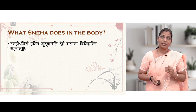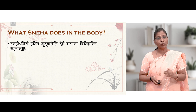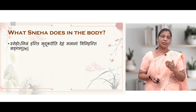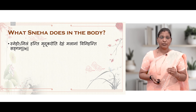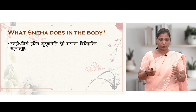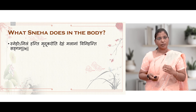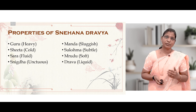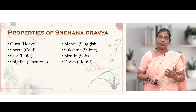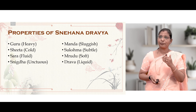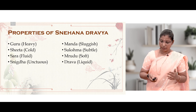What Shodhananga Sneha Pana does in the body: it pacifies Vata, it softens the body, and it removes the Sangha — the connection between waste products from the body. Properties of Sneha Dravya are Guru, Shita, Snigda, Manda, Sukshma, Mrudu, and Drava. Any substance possessing these qualities — heavy, cold, fluid, unctuous, sluggish, subtle, soft, and liquid — can be called a Sneha Dravya.